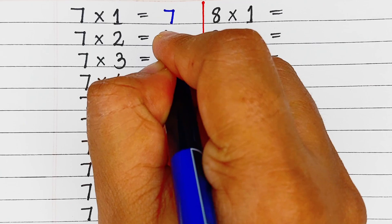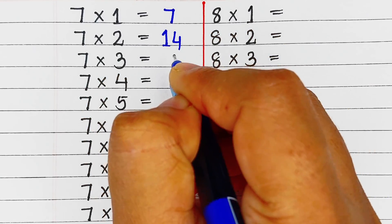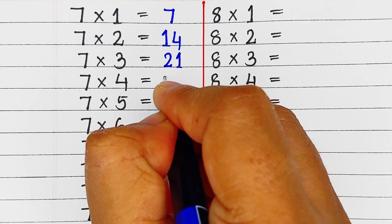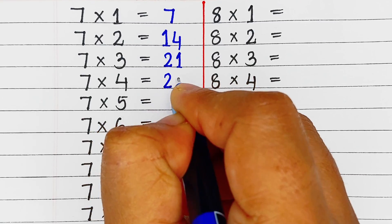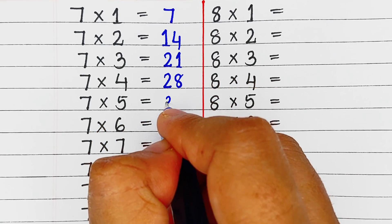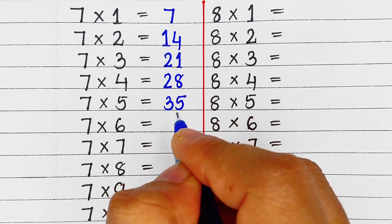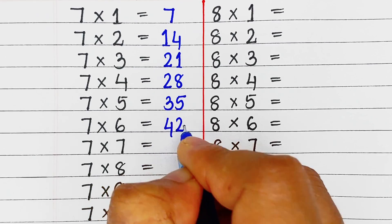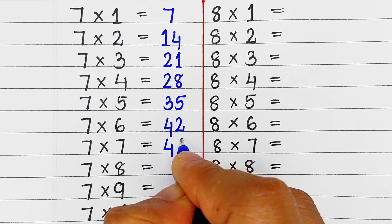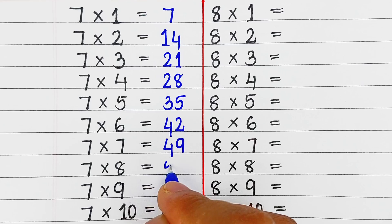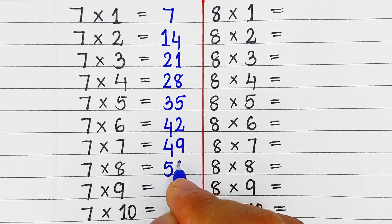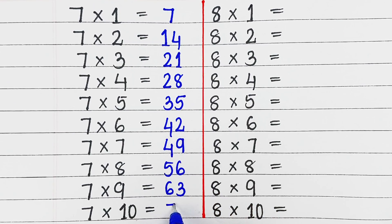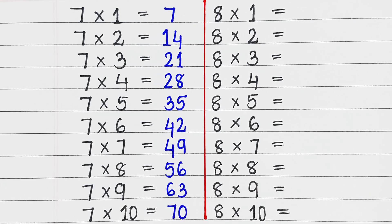Next is table of 7. 7 ones are 7, 7 twos are 14, 7 threes are 21, 7 fours are 28, 7 fives are 35, 7 sixes are 42, 7 sevens are 49, 7 eights are 56, 7 nines are 63, 7 tens are 70.